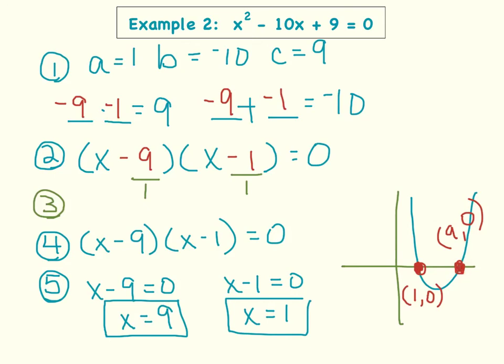The only other thing that I would encourage you to do is I would encourage you to check your work. And so what I mean by that is, for the first x solution, for the first solution of x, x equals 9. So you could go through and go back, plug in the 9 for every x that you see. And it should equal 0. And again, we could do the same thing where x equals 1. You plug the 1 in for each x, and it should equal 0.